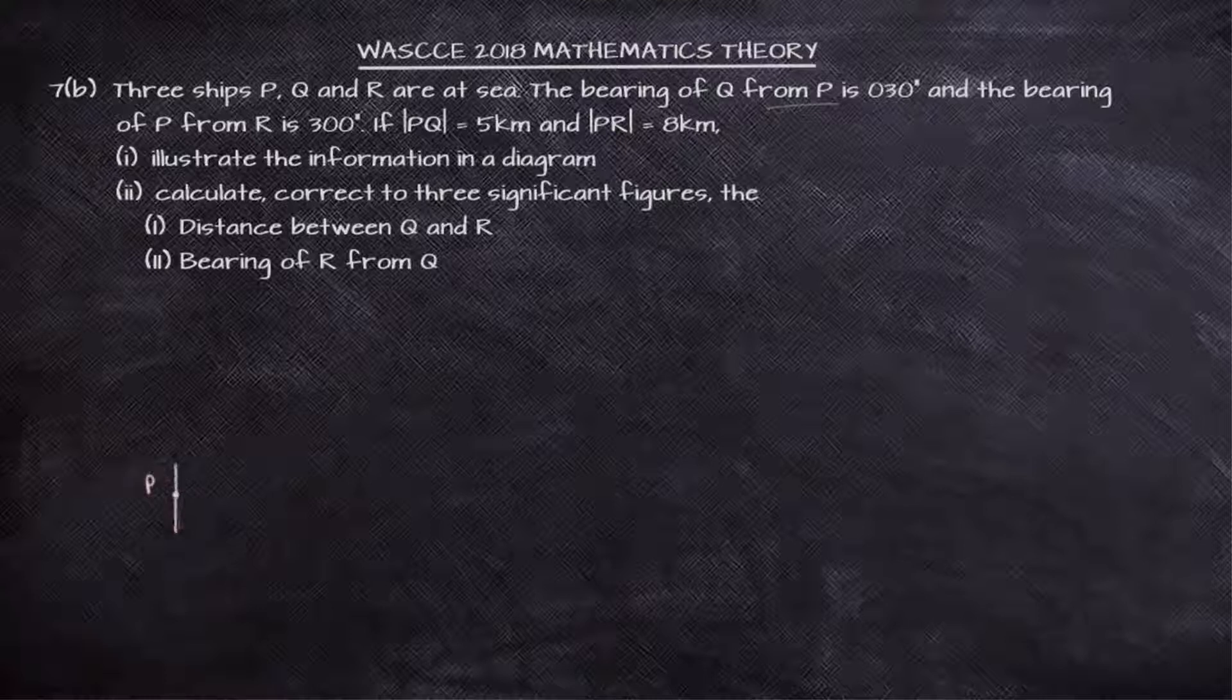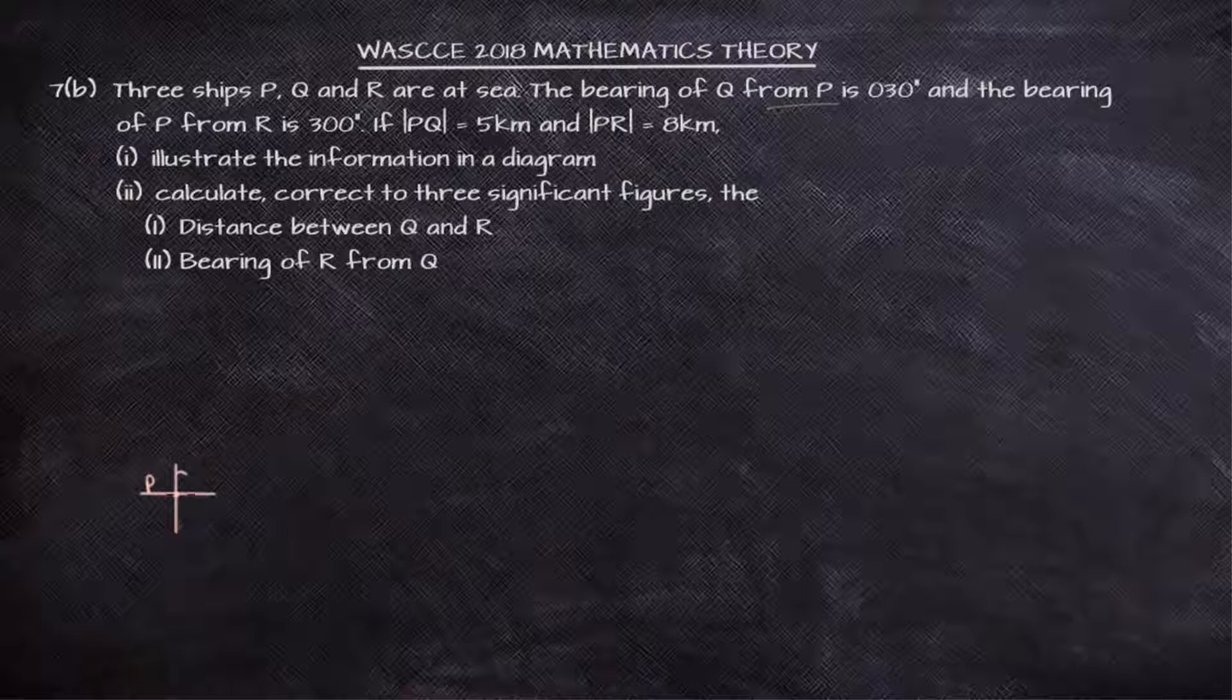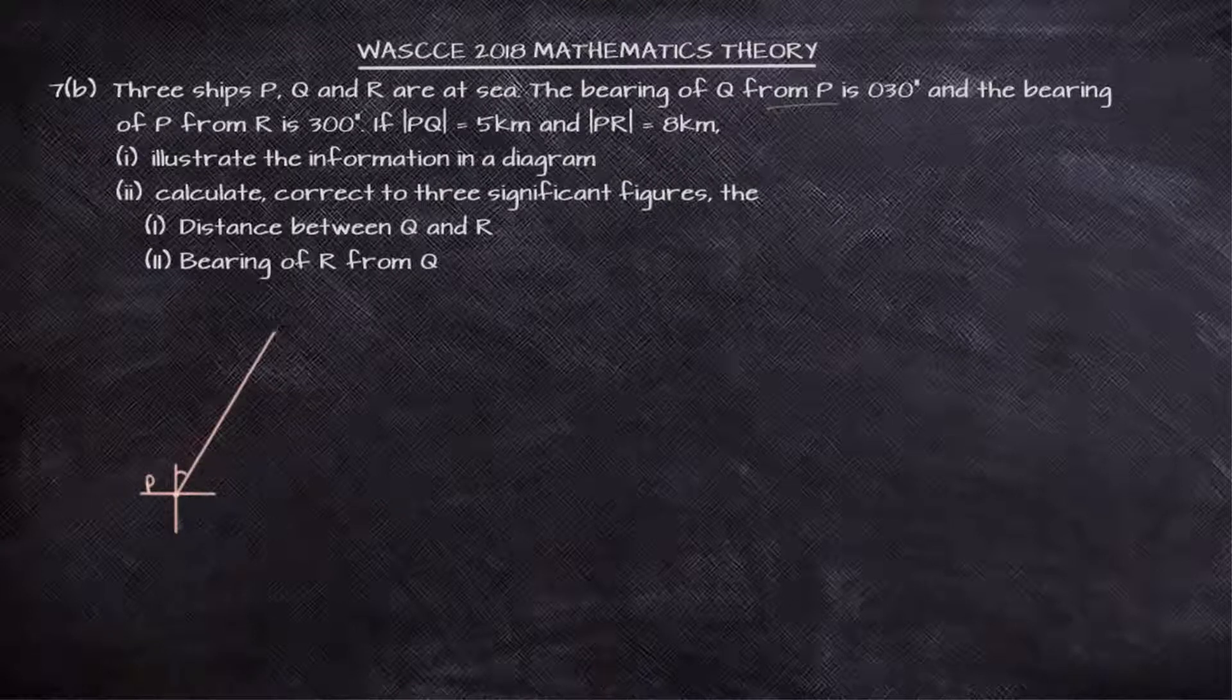If we go to P, I want to draw our cardinal points. The bearing of Q from P, meaning that we take it from P, is 30 degrees. So if we take 30 degrees from the point P and we go 5 kilometers, that will lead us to point Q.